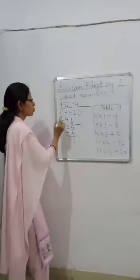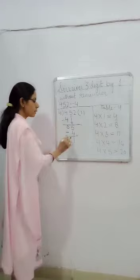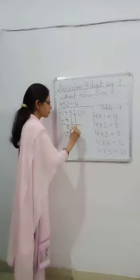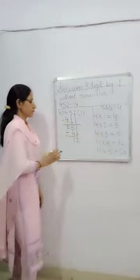Now, we got 1. We have to compare the digit with 4 and 1. 1 is lesser than 4. So, we cannot divide. In that case, we will bring down the third digit that is in the 1's column. Now, 12 will be written over here.